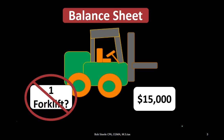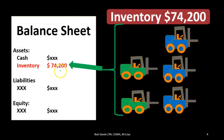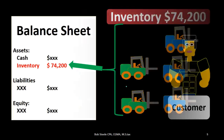We know it's $15,000 because we purchased it on a free market — either with cash or some combination of cash and credit. That free market purchase price gives us the $15,000 amount. This results in $74,200 of inventory reported on the balance sheet, backed up by those five forklifts.